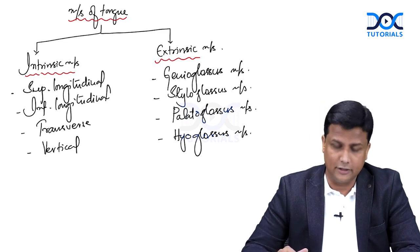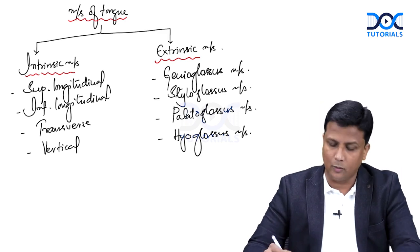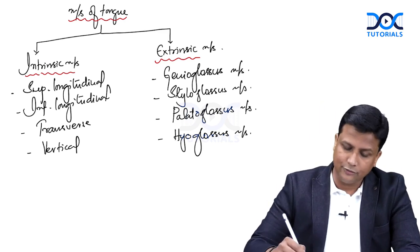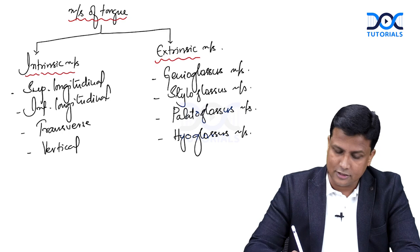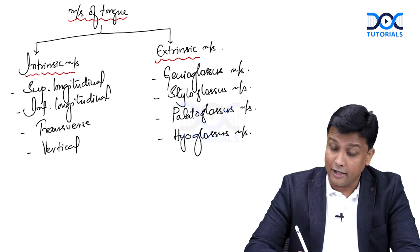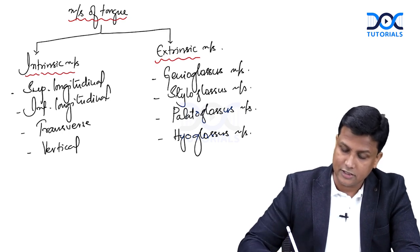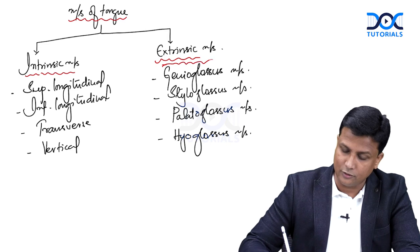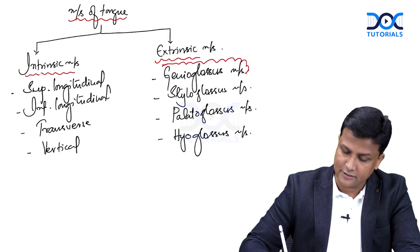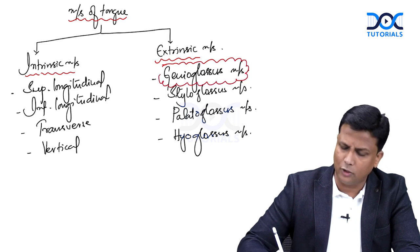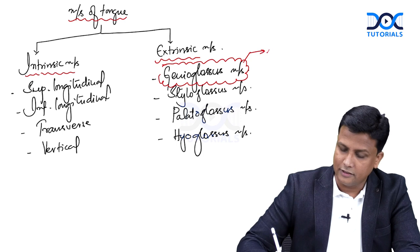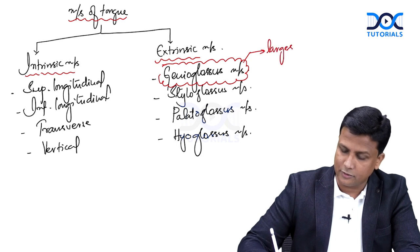Now, once you are perfect with all the names of these muscles, what are the MCQs which are possible? Question number one: out of all these muscles, which is the largest muscle of the tongue? Remember, the largest muscle of the tongue is the genioglossus muscle.